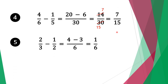Moving on to question five, we have two-thirds minus a half. Again we have different denominators, so we multiply three by two to get six. Six divided by three is two, two times two is four. Do the same for the second fraction: six divided by two is three, three times one is three. Four minus three is one, so our solution is one over six.